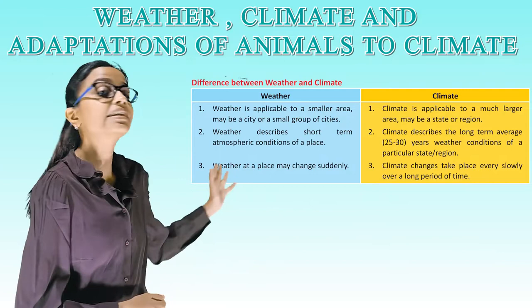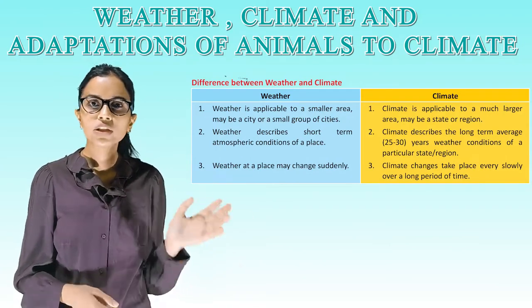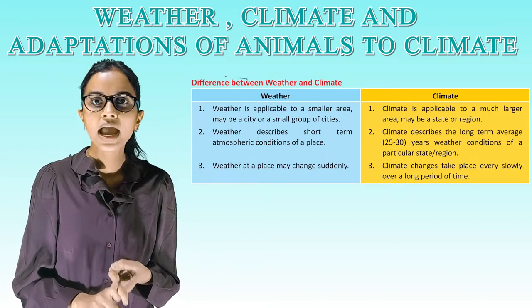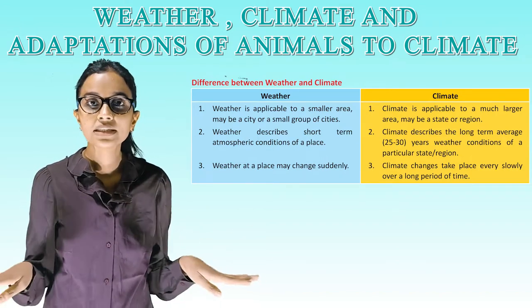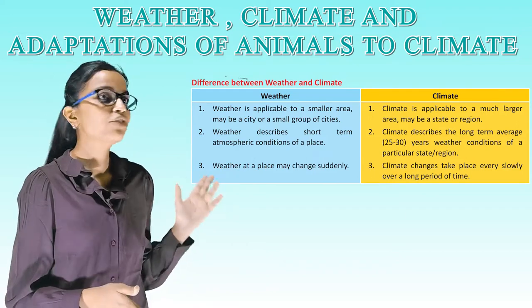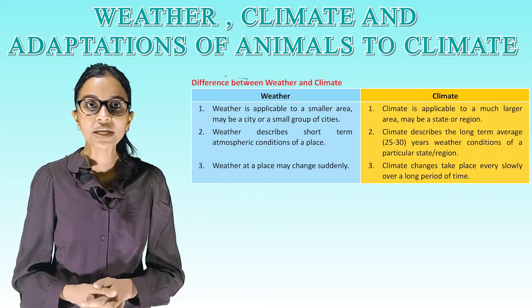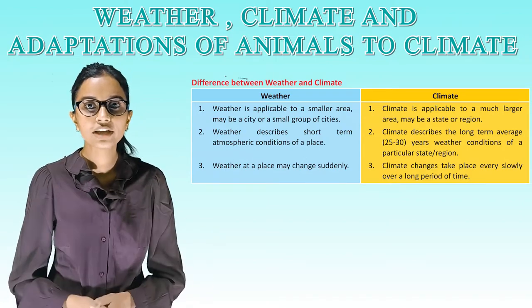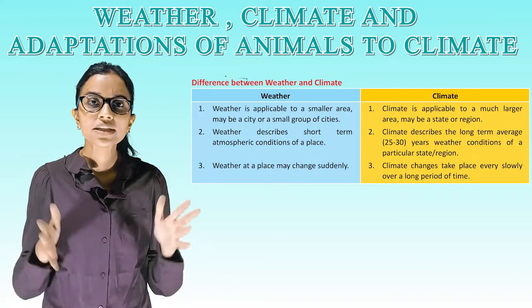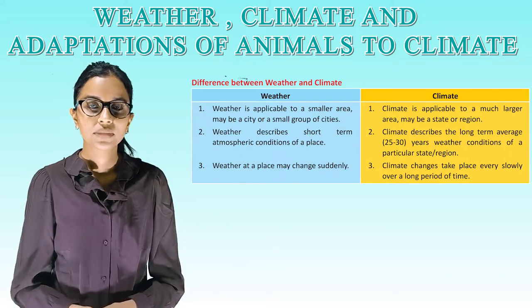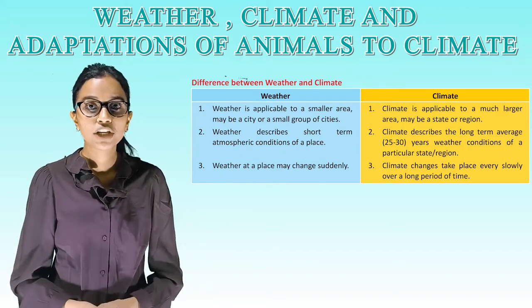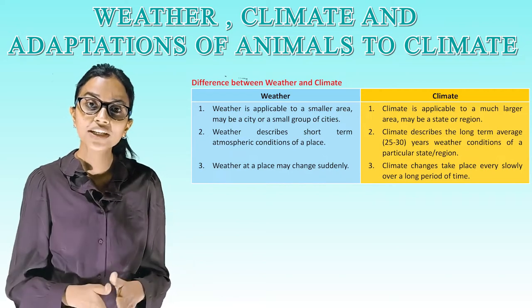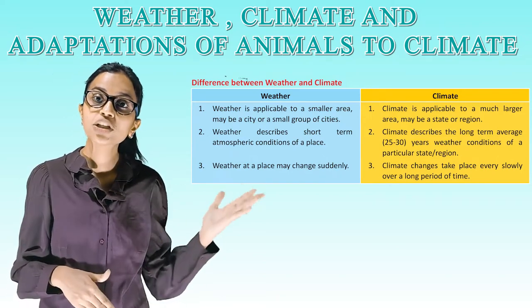The difference between weather and climate: weather is applicable to a smaller area, such as a city or small group of cities, while climate is applicable to a much larger area like a state or region. Weather describes short-term atmospheric conditions of a place, while climate describes the long-term average (25 to 30 years) conditions of a particular state or region. Weather at a place may change suddenly, whereas climate changes take place very slowly over a long period of time.